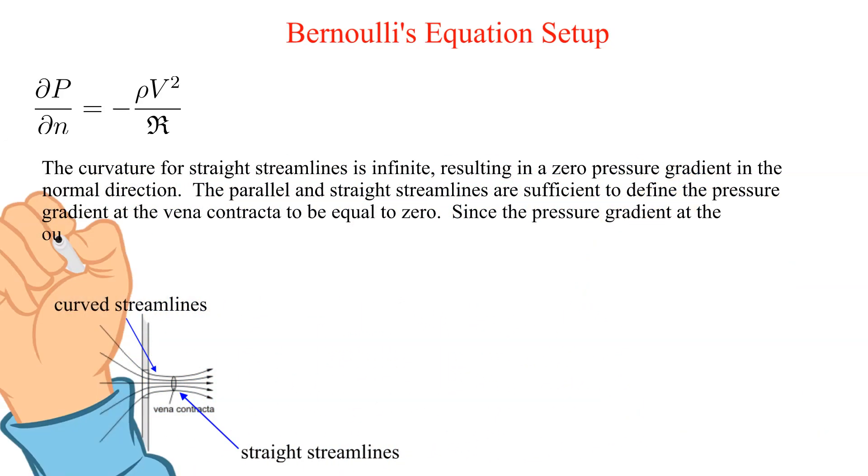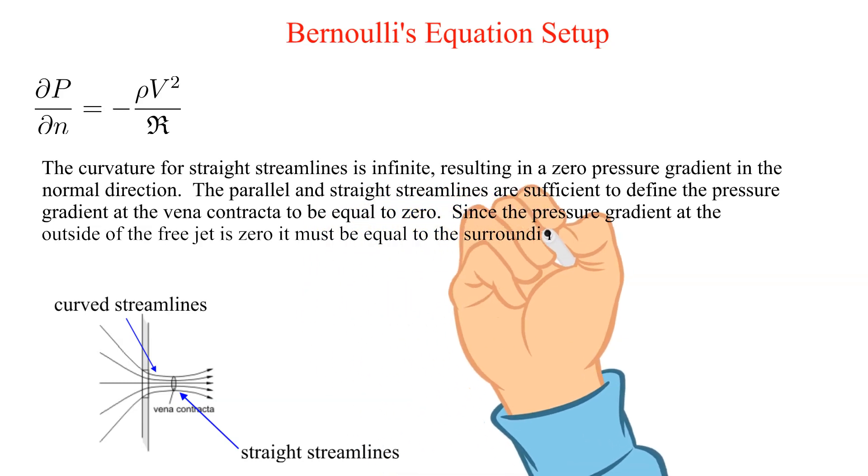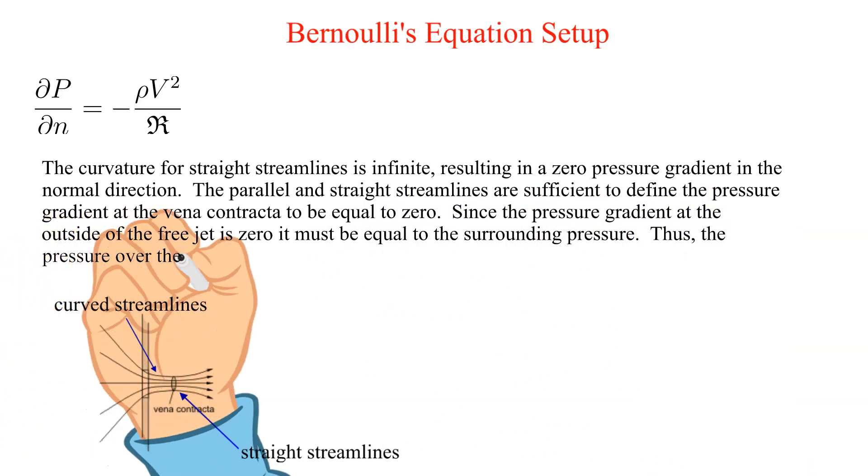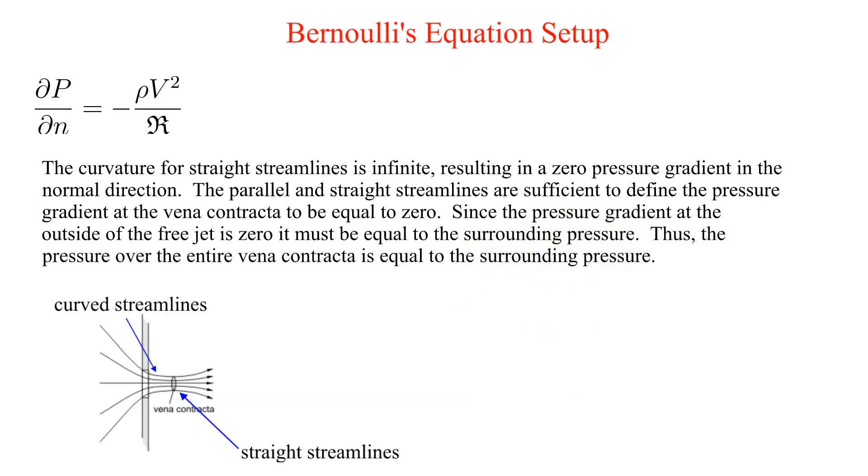Since the pressure gradient at the outside of the free jet is zero it must be equal to the surrounding pressure. Thus, the pressure over the entire vena contracta is equal to the surrounding pressure.